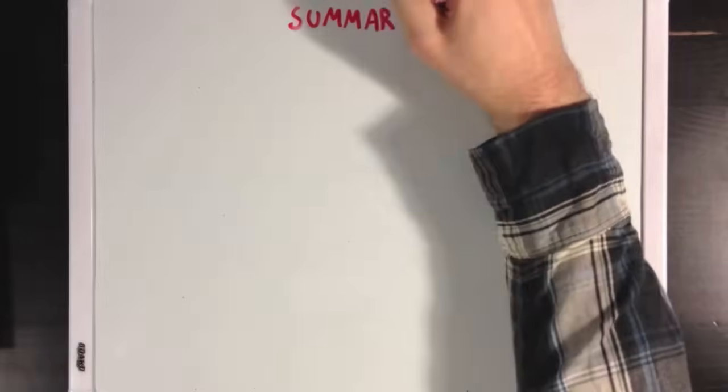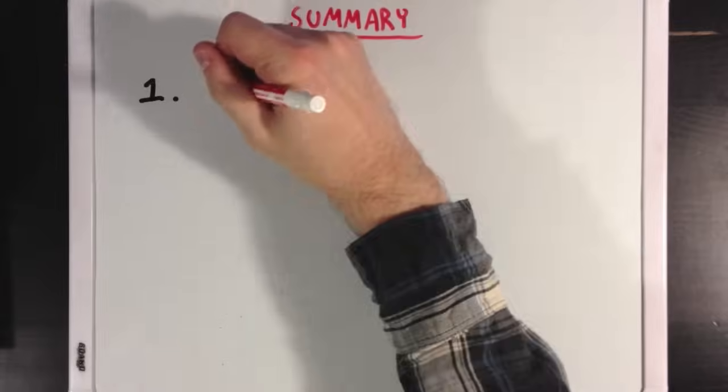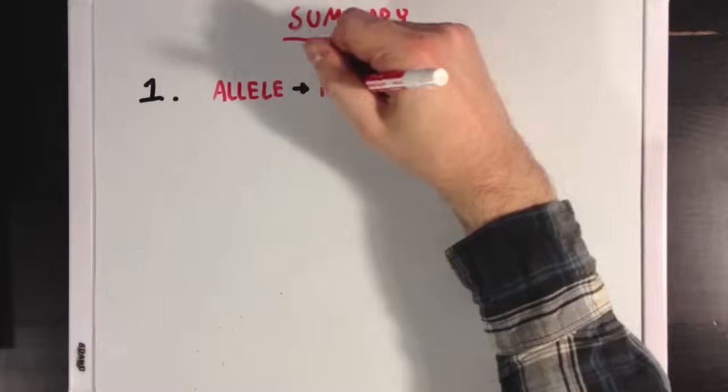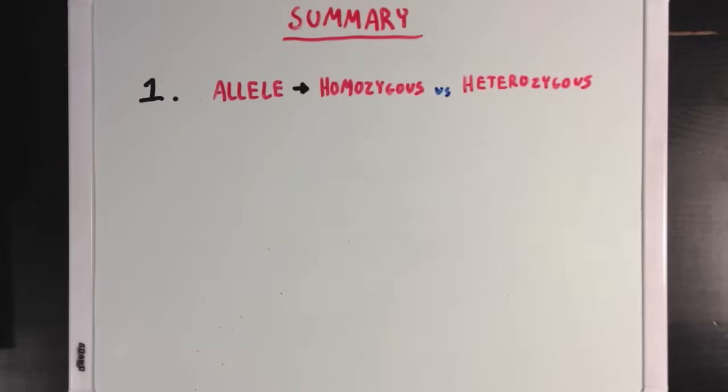So what did we learn? Well, first we learned what an allele is, and the difference between homozygous and heterozygous, as well as the difference between dominant and recessive traits, in relation to alleles.